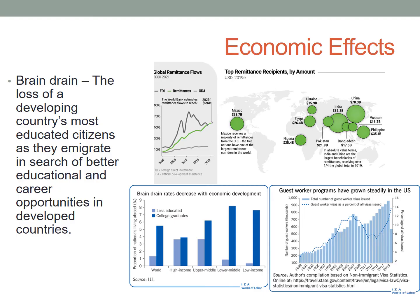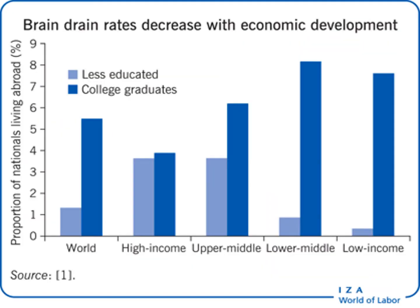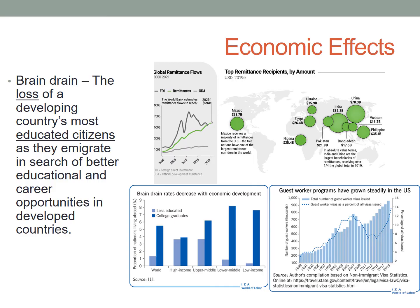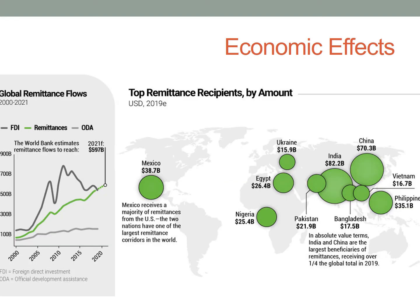But many migrants are young, well-educated professionals who will move to core countries to make more money. This produces an effect known as brain drain, which is the loss of a developing country's most educated citizens as they emigrate in search of better educational and career opportunities in developed countries. For example, many talented professionals in the tech industry have been pulled from around the world to Silicon Valley outside of San Francisco in California. This loss can slow the source country's economy and development. But when remittances are sent back to their home country, it can improve the quality of life there, though it also means a significant portion of their earnings are not being infused into the economy of the destination country where they're working.